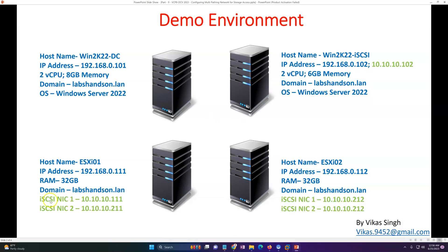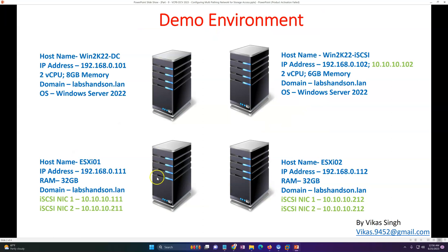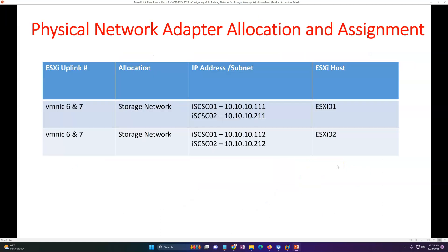On each ESXi host you will see iSCSI NIC1 and iSCSI NIC2 — this is what I was describing. I'm configuring this over IP using iSCSI, and the same applies to ESXi host 2. For the physical network adapter assignment, I have two ESXi hosts — ESXi0 and ESXi1 — and I'm going to use VM NIC 6 and 7 for storage.